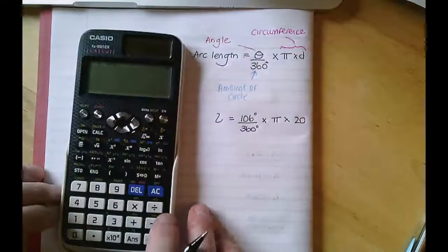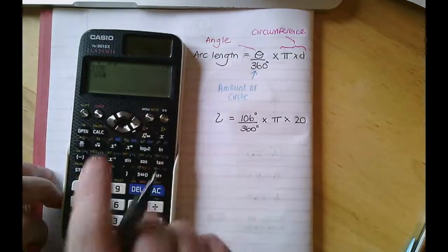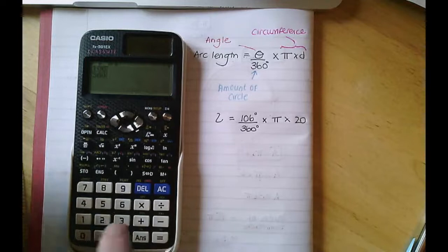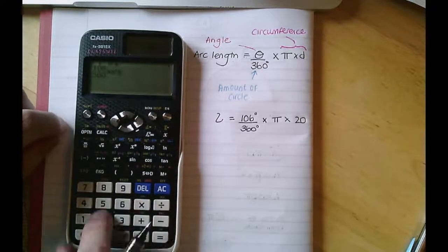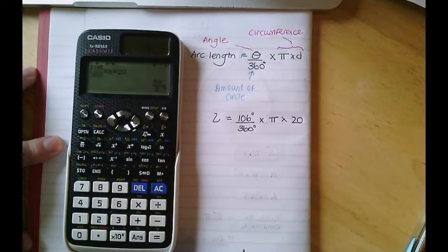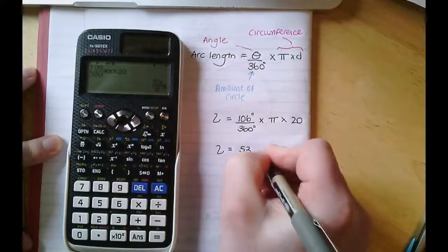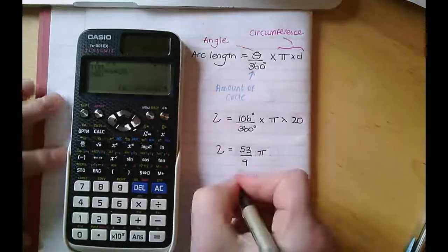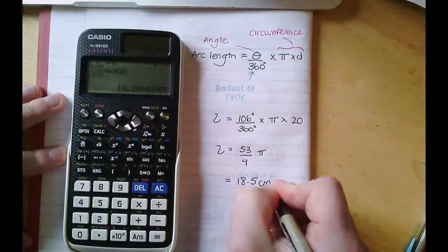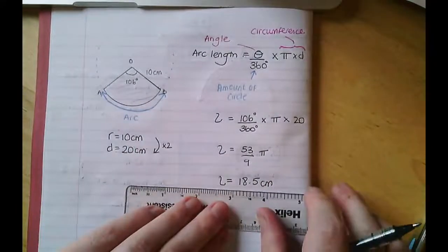All I need to do is put that into my calculator: 106 over 360, then right so I'm not at the bottom of the fraction, times by pi, times by 20. That gives me 53 over 9 pi as a fraction, or to one decimal place 18.5 centimetres. So that arc length is 18.5 centimetres.